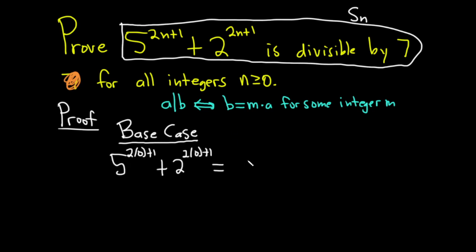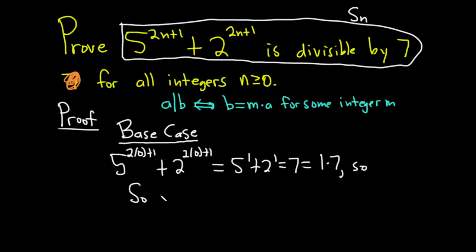This is going to be 5 to the first power, because 2 times 0 is 0, plus 2 to the first power. So 5 plus 2 is 7, and that's equal to 1 times 7 — and 1 is an integer. So we've shown it's a multiple of 7, in other words it's divisible by 7. In other words, S sub 0 is true when n equals 0, which is the base case.